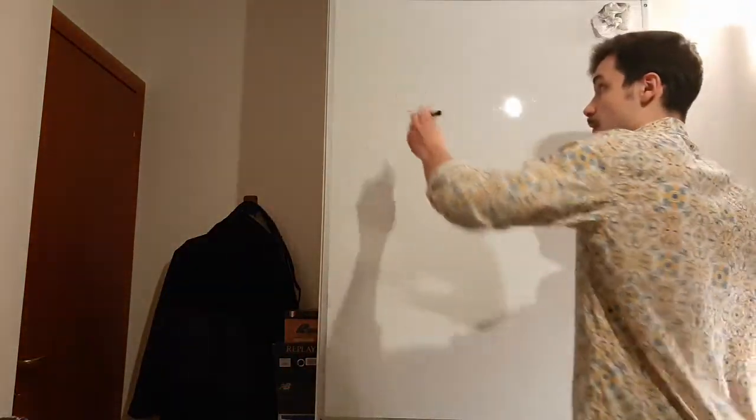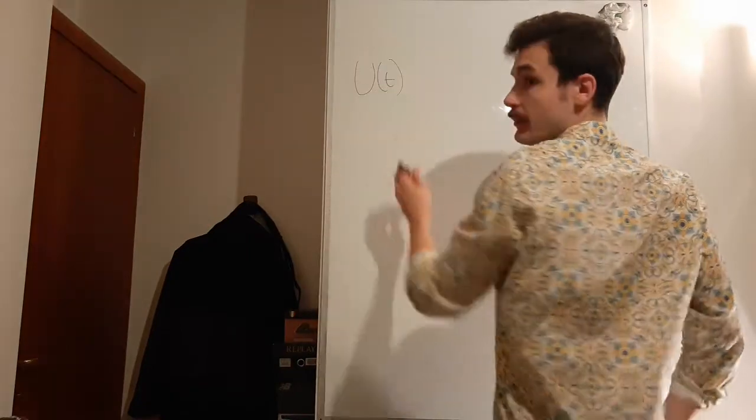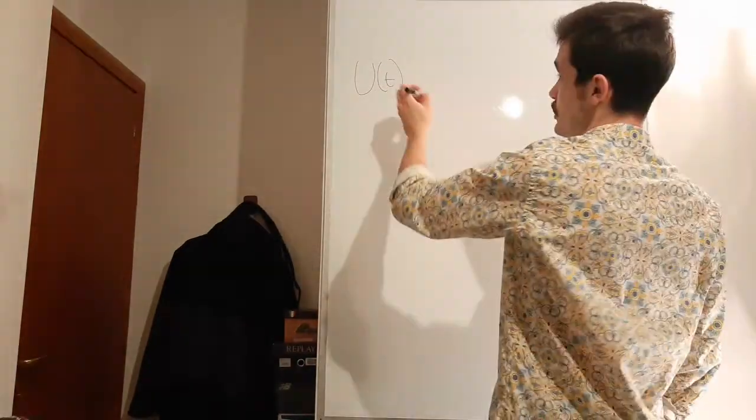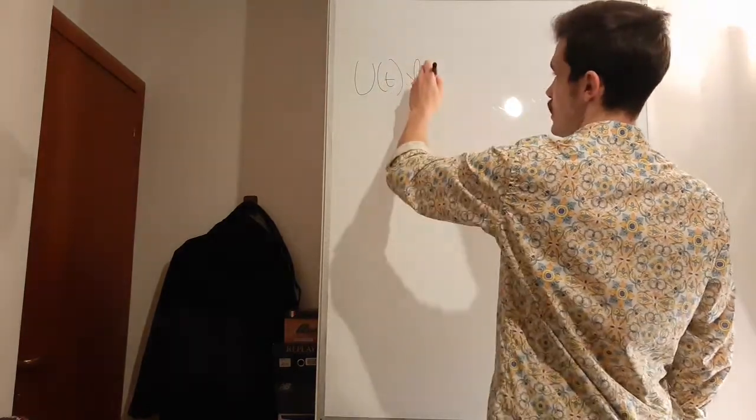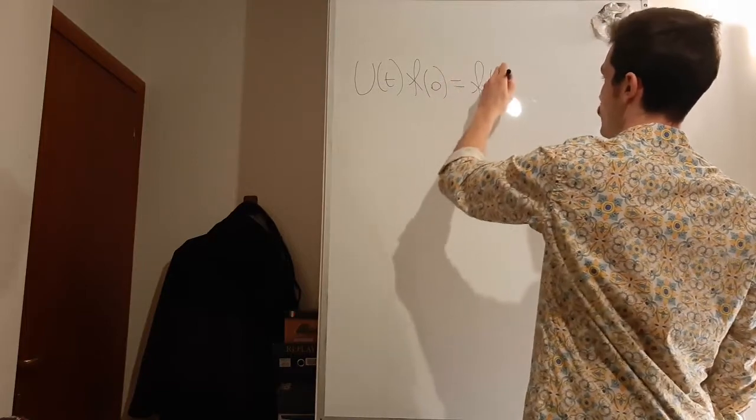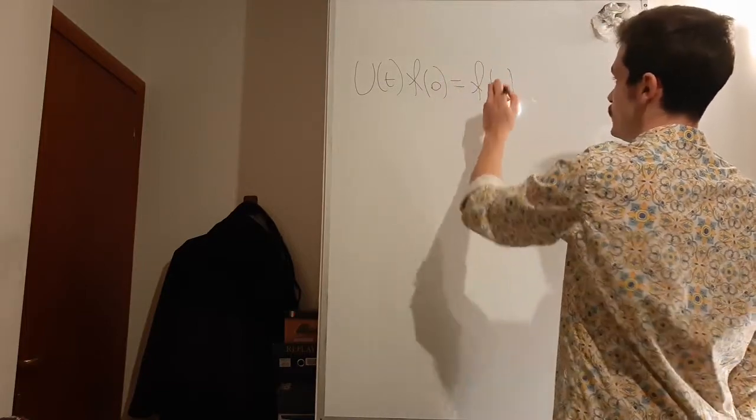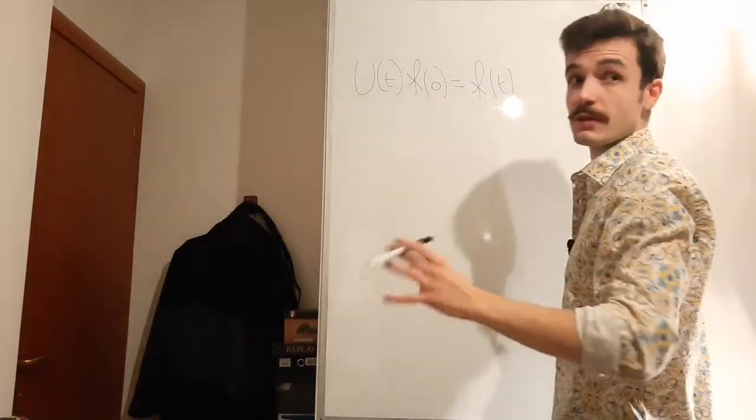Let's start talking about this Liouville formalism. A propagator is an operator, let's call it U of T, that has a very interesting feature. If you apply it to a function, whatever function, at time zero, it will give you the function at time t. So it propagates the function in time.